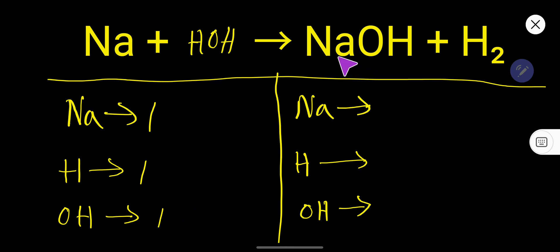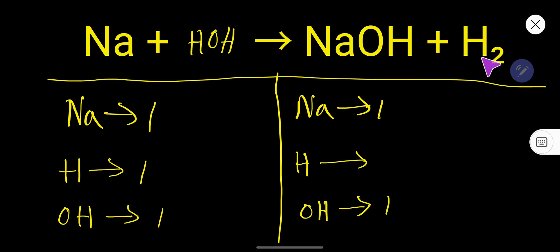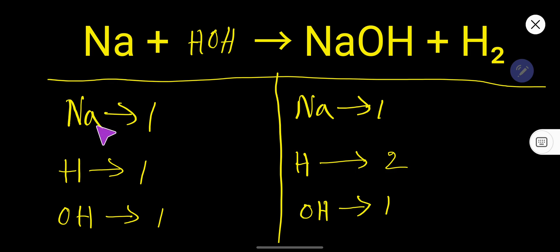On the right-hand side, the number of sodium is 1, the number of hydroxide ion is 1 also, and the number of hydrogen is 2. So to balance this equation, we have to balance the number of sodium, hydrogen, and OH from both sides.